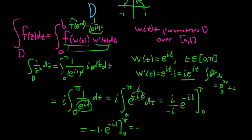So this is equal to negative 1 times, so here we have e to the negative i pi, plugging in pi first, subtracting and plugging in 0, so we get e to the 0.